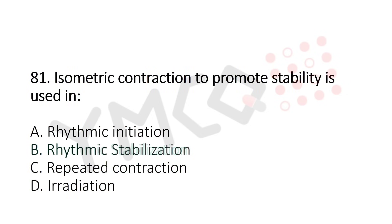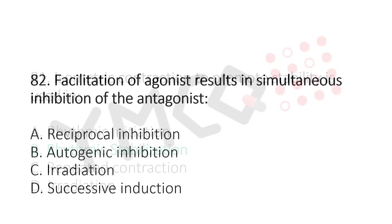Question 82: Facilitation of agonist results in simultaneous inhibition of antagonist — option A: reciprocal inhibition, option B: autogenic inhibition, option C: irradiation, option D: successive induction. The answer is option A: reciprocal inhibition.